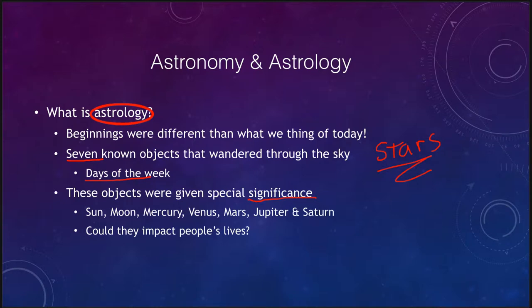The beginnings of this were quite different from what we look at today. It was thought that these objects could have an impact on people's lives — that they could affect how people's lives worked and could make predictions of what would happen in someone's life based on the positioning of the stars.